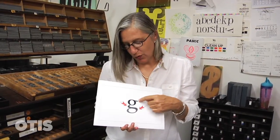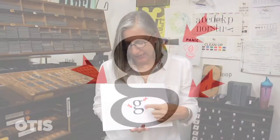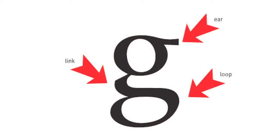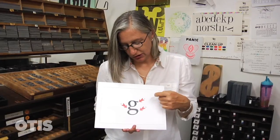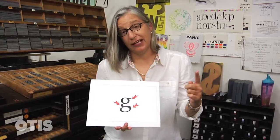The G is a special letter — it has lots of special parts. What would be a serif on any other letter is an ear on a G. This bottom shape is called the loop, and the thing that connects your loop to your bowl is a link. So G's are the only ones that have ears, links, and loops.